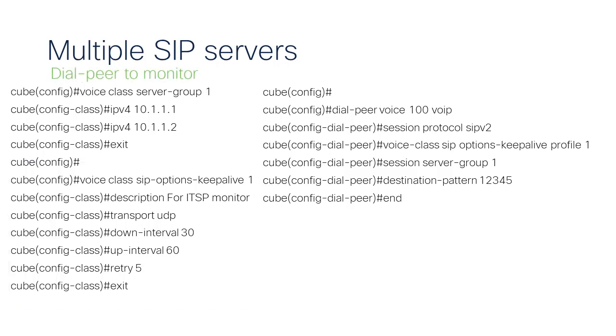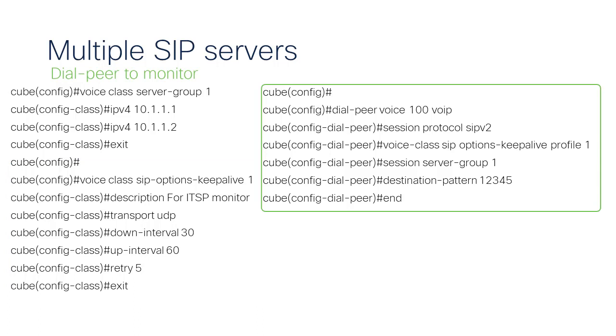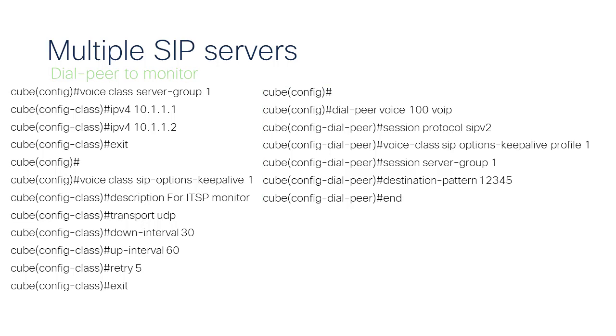Lastly, reference them on the intended dialpeer. For instance, dialpeer 100 already has session protocol SIP v2 and a destination pattern of 12345.